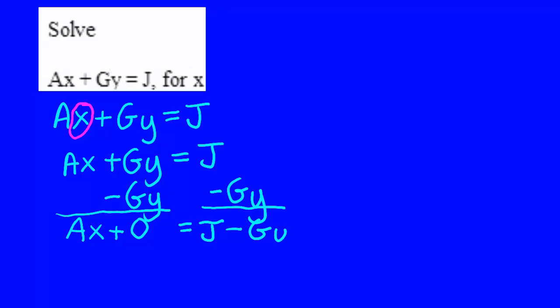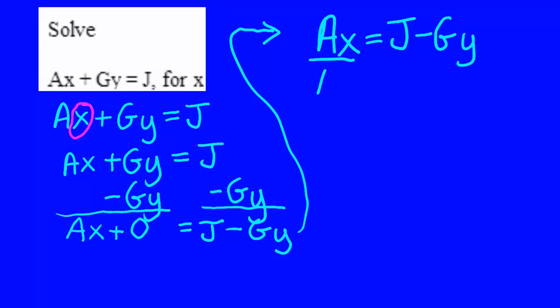Notice that when the problem writes a letter as a capital letter, you write a capital letter. When it writes a letter as a lowercase letter, you write the lowercase letter. So, ax equals j minus gy. Now, to get x by itself, I'll divide both sides by a. The a's cancel, which means they turn into a 1 because a over a is 1. x is going to equal j minus gy over a.